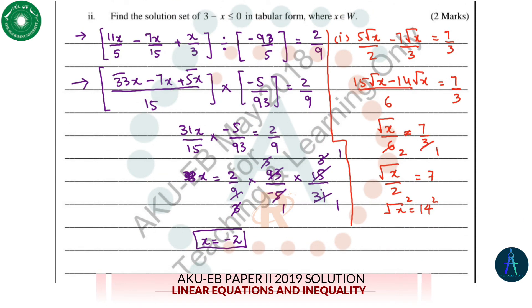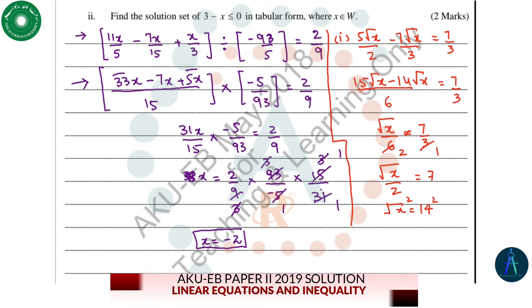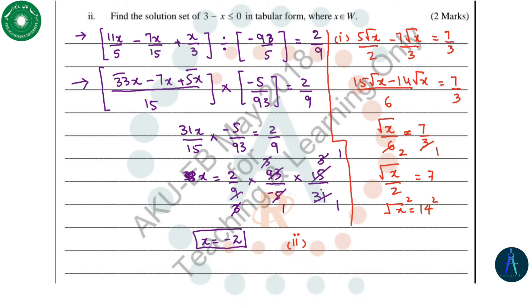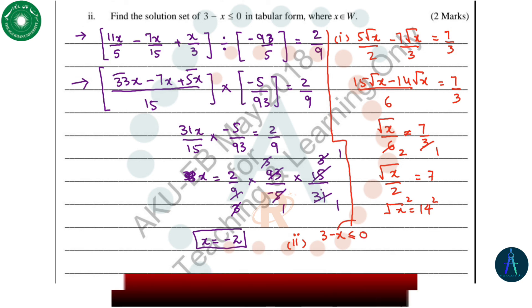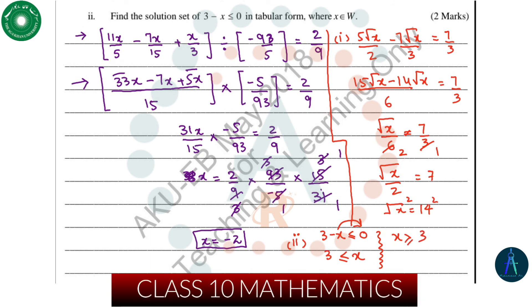Then we have find the solution of 3 minus x less than or equal to 0 in tabular form, such that x belongs to whole numbers. Let's solve this inequality in the second part. 3 minus x less than or equal to 0. We shift x to the other side: 3 less than or equal to x. This inequality can be written as x is greater than or equal to 3.